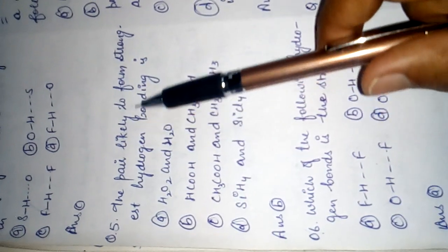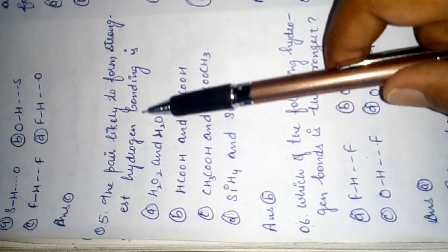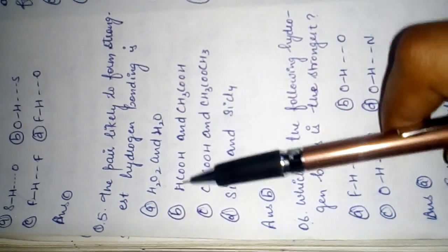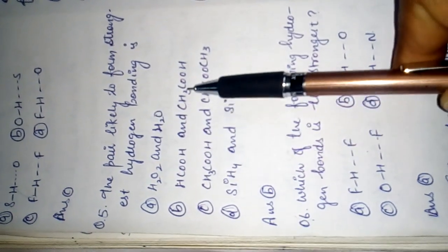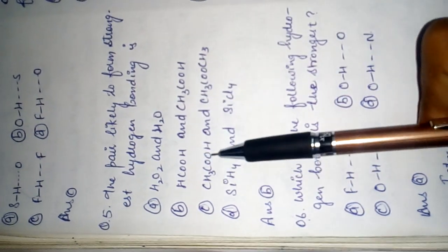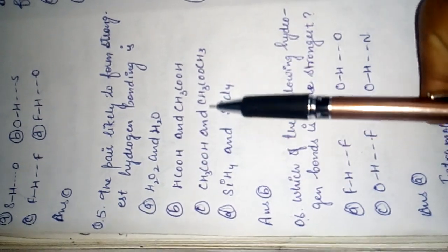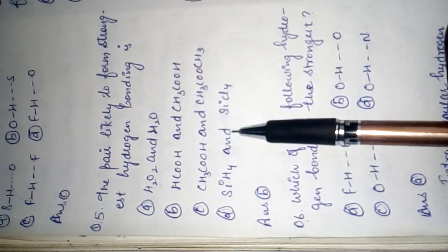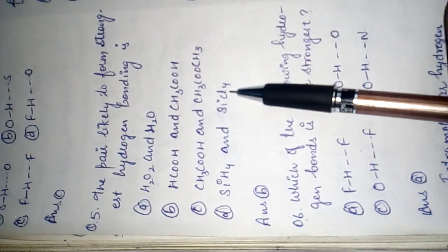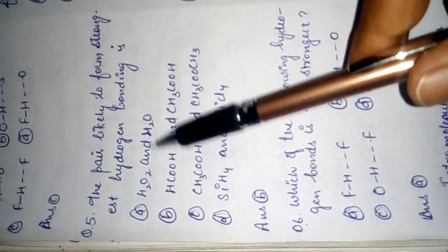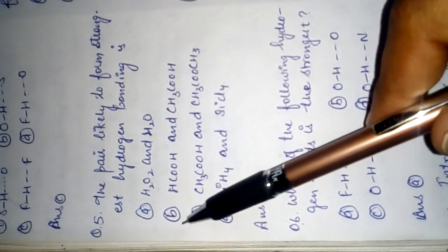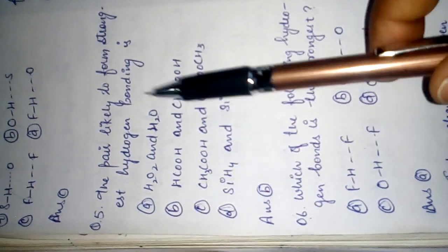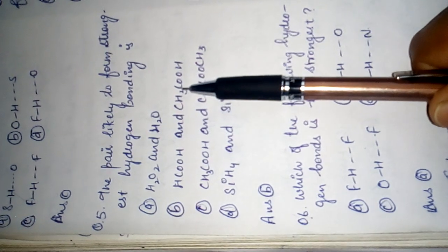The pair likely to have the strongest hydrogen bonding: options are H₂O₂–H₂O, HCO-H, CH₃COH, CH₃COO, SiH₄, SiCl₄. The right answer is (b). The reason — please comment in the comment box.